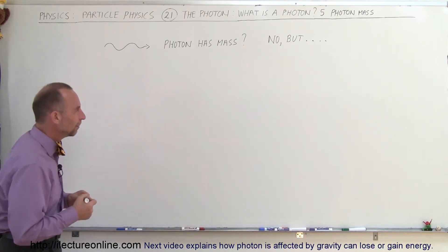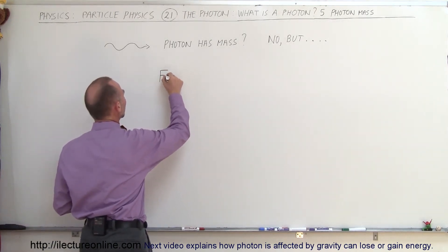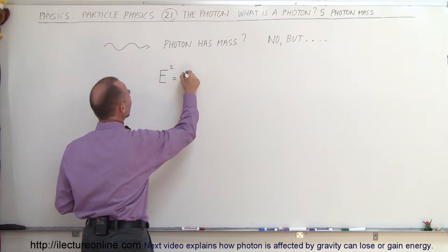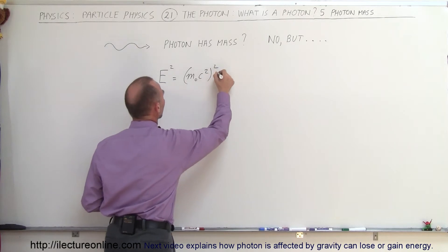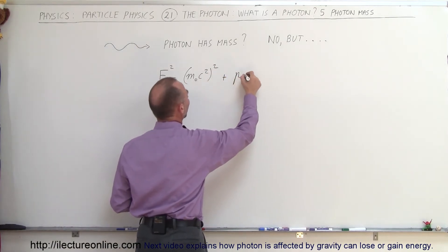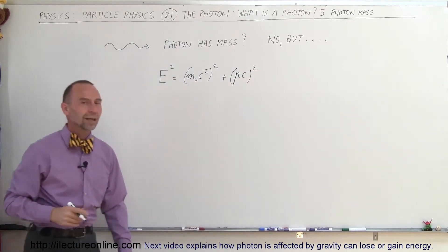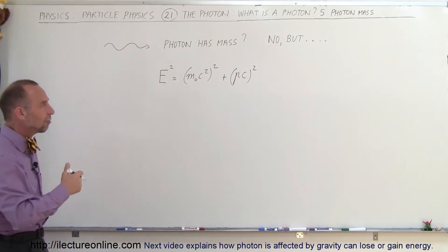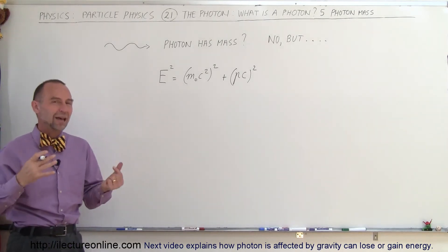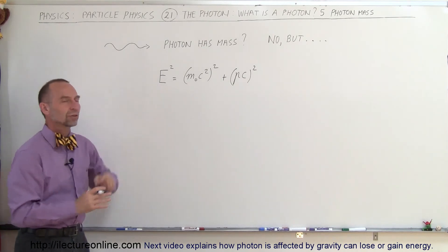So here we have the equation from relativity where the total energy of a particle squared is equal to the rest mass of that particle, quantity squared, plus the momentum times C, quantity squared. That is good for any particle and that is also good relativistically. So no matter how fast a particle moves as it's gaining mass with increasing speed, we can say that the total energy squared is equal to that.